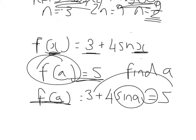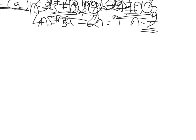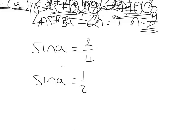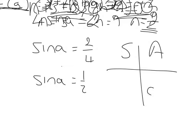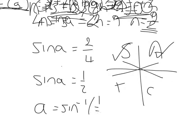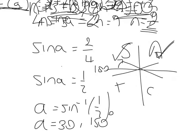I've got trig terms to the left and number terms to the right. So that will be 4 sine a is equal to 5 minus 3, which is 2. So sine a is then equal to 2 over 4, which I can simplify down to 1 half. At that point, I can introduce the CAST diagram. Sine a is equal to sine inverse of 1 half. That will give me a round value of 30 degrees — so that's my all-quadrant result. In the sine quadrant, I'm moving backwards from 180 by 30 degrees, which gives me my second solution: 150 degrees.